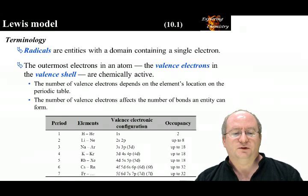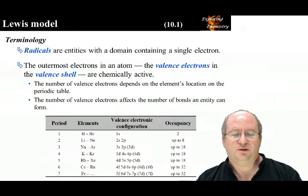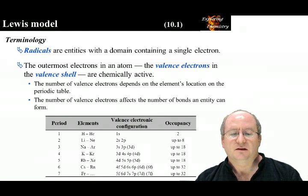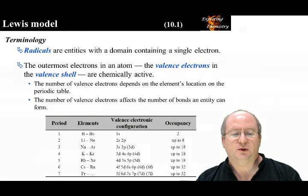For n equals 2, there are 4 orbitals. One 2s orbital and three 2p orbitals, which can hold a maximum of 8 electrons. This is the basis for the octet rule you learned in high school.